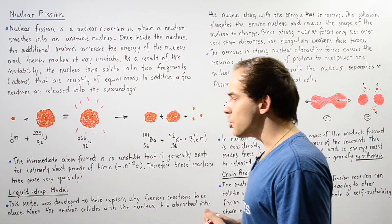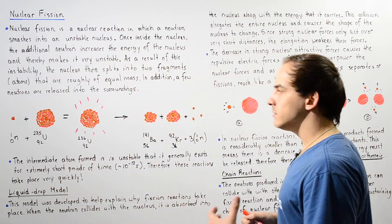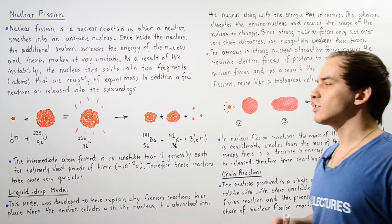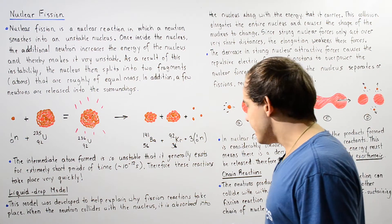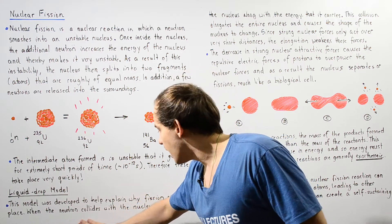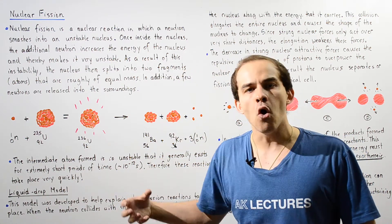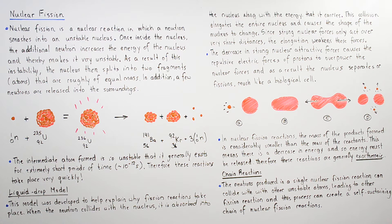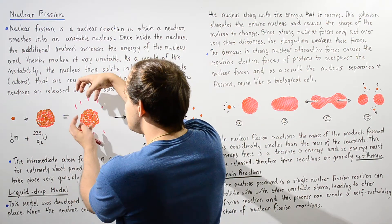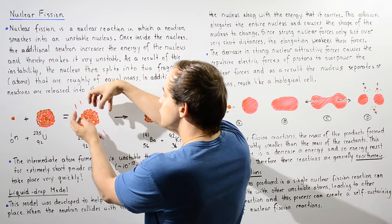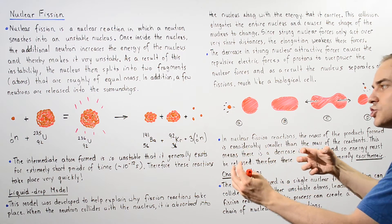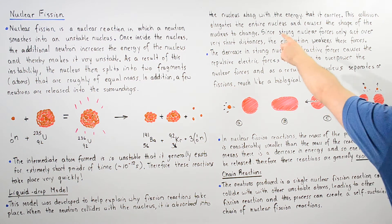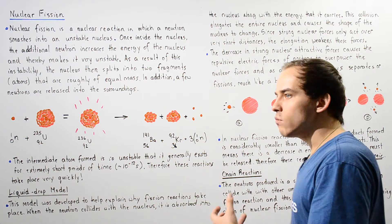Scientists came up with a model known as the liquid drop model to explain the instability of this compound nucleus and how nuclear fission reactions actually take place. According to this model, when the neutron collides with the nucleus it is absorbed along with the energy it carries. This increases the energy of all the nucleons — the protons and neutrons inside the nucleus — and changes the shape of the entire nucleus, elongating it. Since strong nuclear forces only act over very short distances,